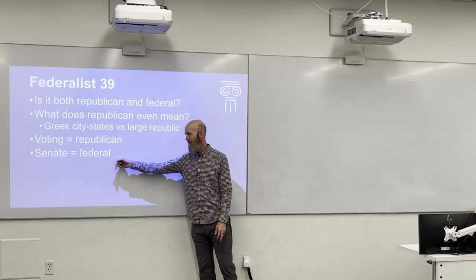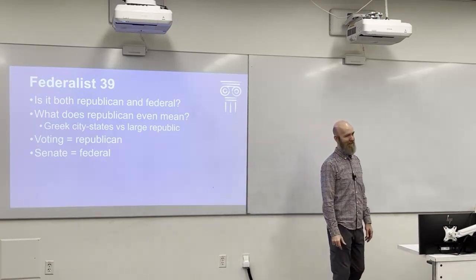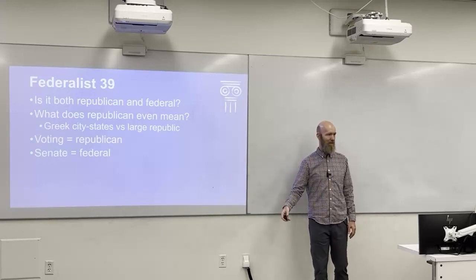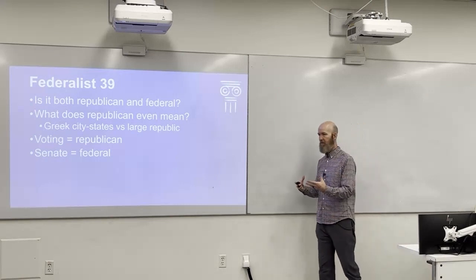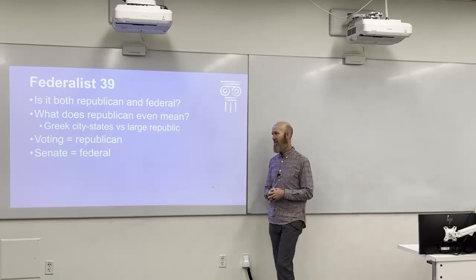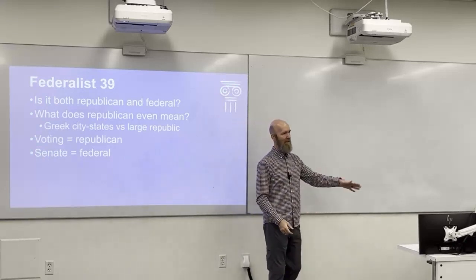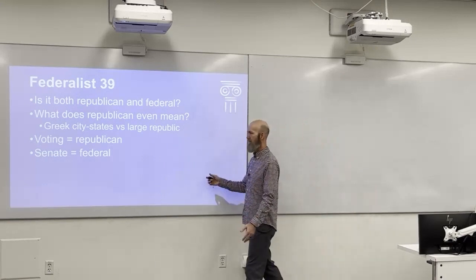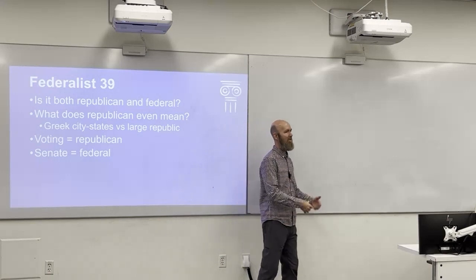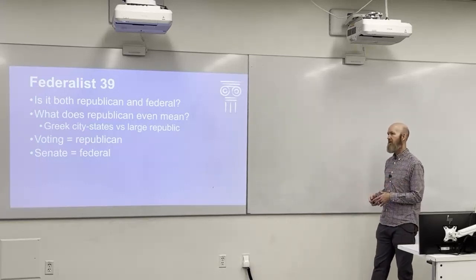Originally, state legislatures got to pick the senators from their state — for example, the legislature in Tallahassee would pick Florida's senators. Since the state government was picking the senators, the senators were representing the state, not just the people directly, and in that sense state power was protected. One anti-federalist criticism was that if the national government is so powerful, it will make the states irrelevant. Federalist 39 responds that the Senate, chosen by state leaders, would never allow the national government to destroy state powers. The Senate kept it federal; voting for the House and President kept it republican.